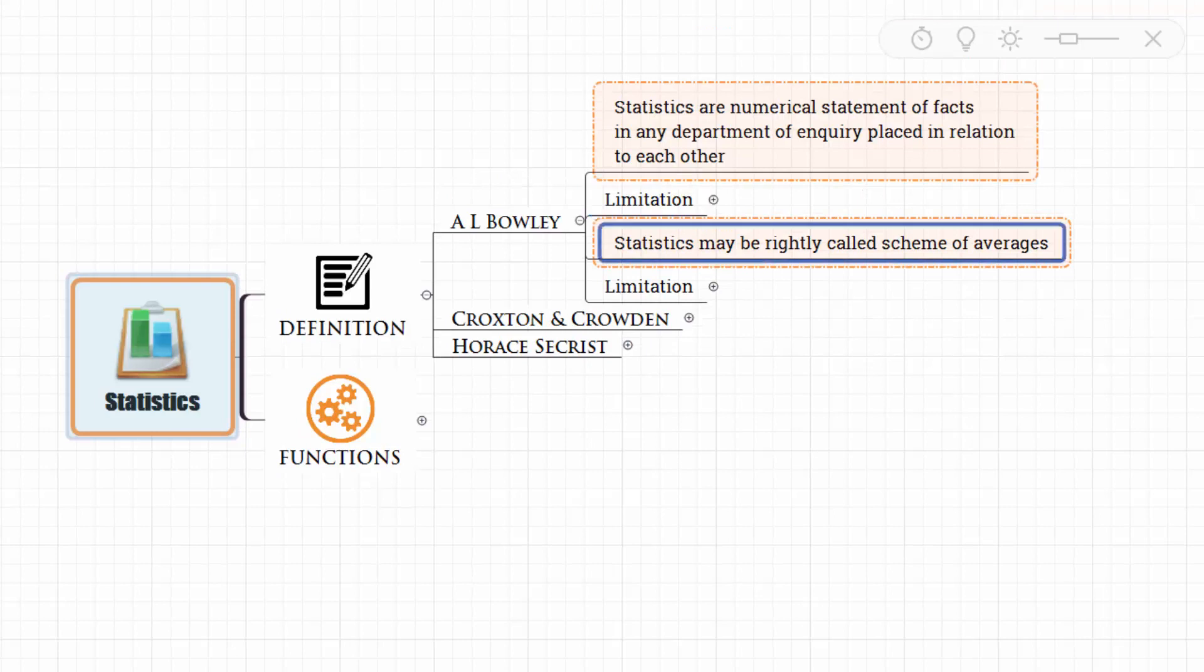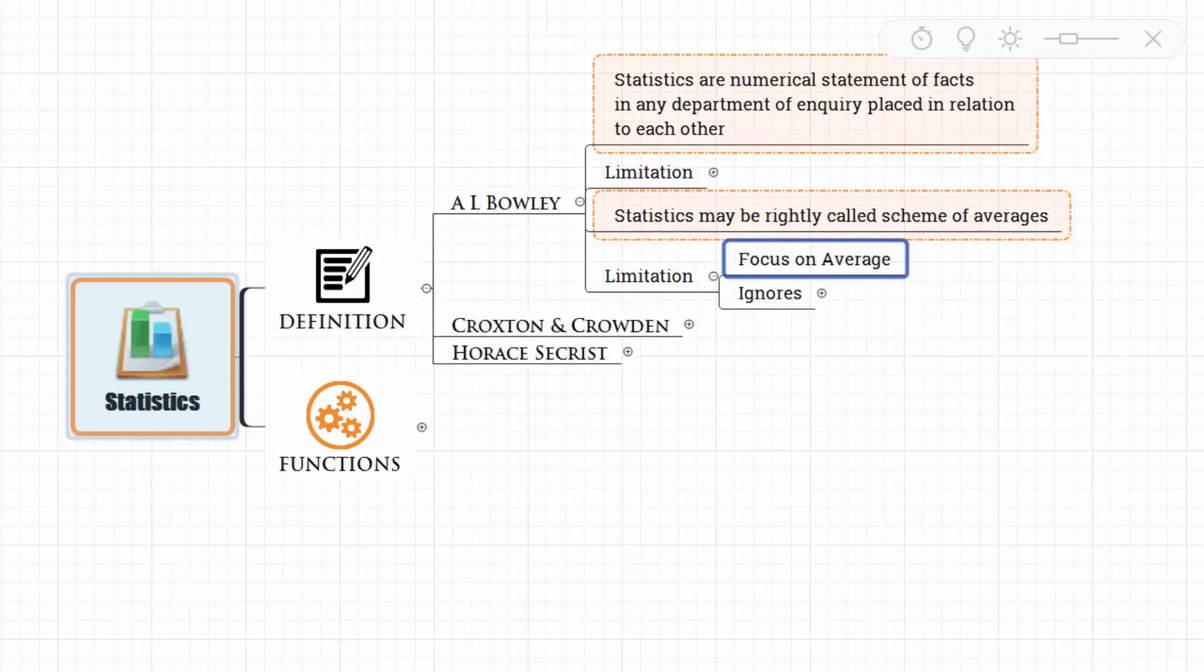We also have one more definition from A.L. Bowley where he said statistics may be rightly called a scheme of averages. But this definition also has its own limitation because here the focus is only on average and it ignores various other measures that are available in statistics.